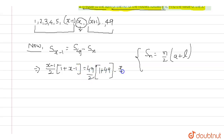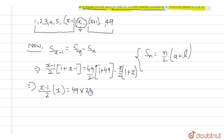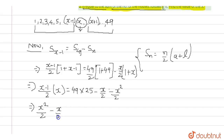That equals 49/2 × (1 + 49) minus x/2 × (1 + ...). Solving the right side: 49 plus 1 is 50, divided by 2 gives 25, so we get 49 × 25 minus x/2 minus x²/2. On the left side we get x²/2 minus x/2.